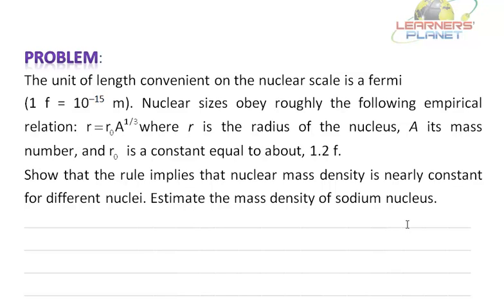The unit of length convenient on the nuclear scale is Fermi. We know that 1 Fermi is equal to 10 to the power minus 15 meters.